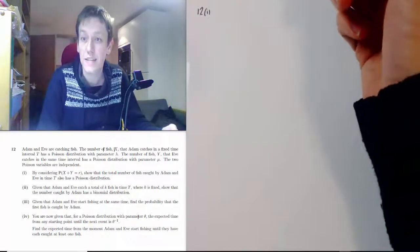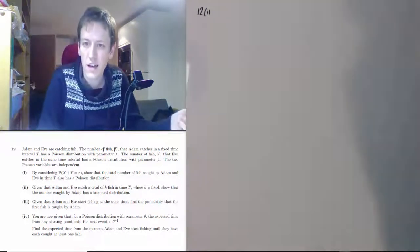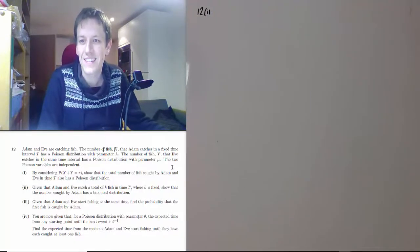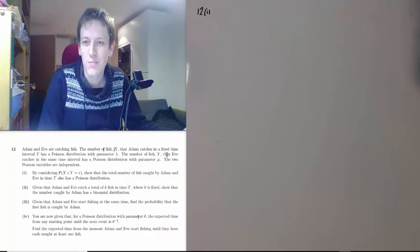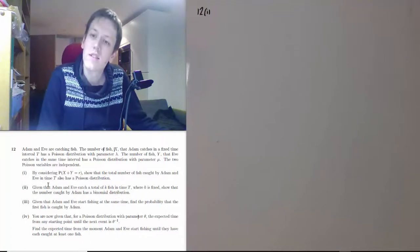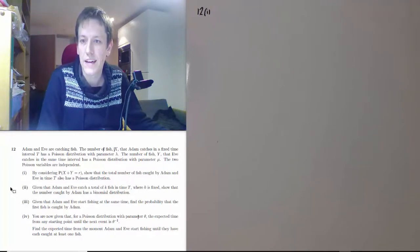We have question 12 from STEP 2, 2017 — a probability question about Adam and Eve catching fish. Adam catches fish at a Poisson rate lambda and Eve at a Poisson rate mu, and they are independent Poisson variables. The problem asks us to consider the probability that X plus Y equals r, and show that the total number of fish caught by Adam and Eve in time t is also Poisson distributed.